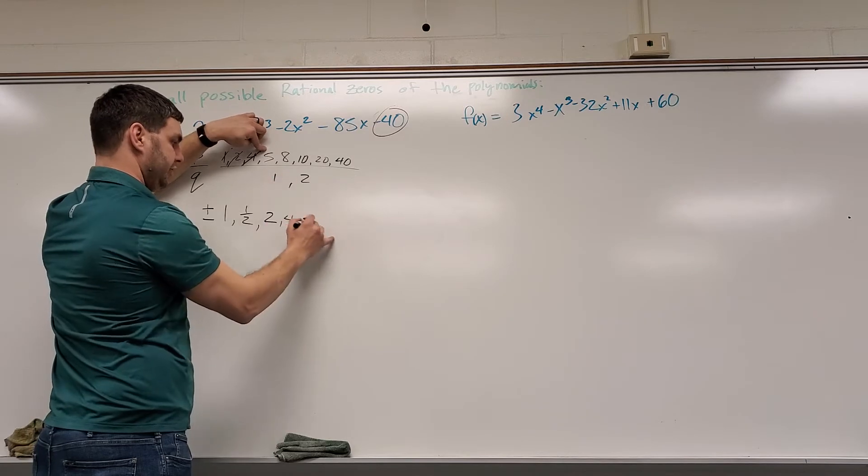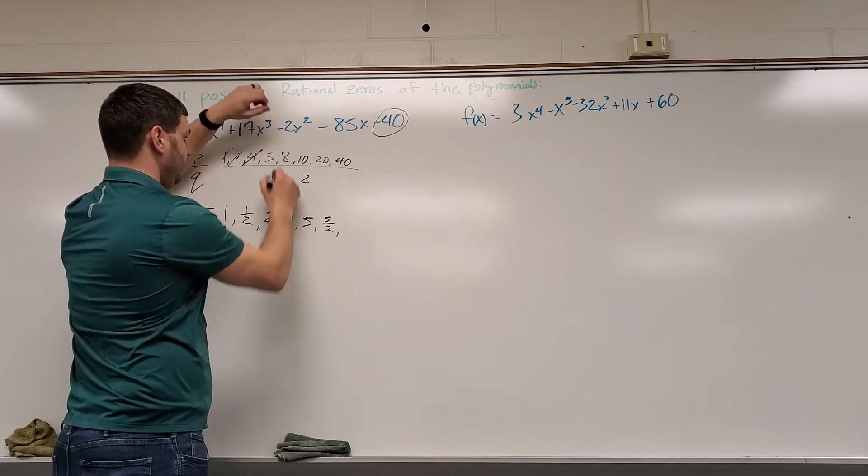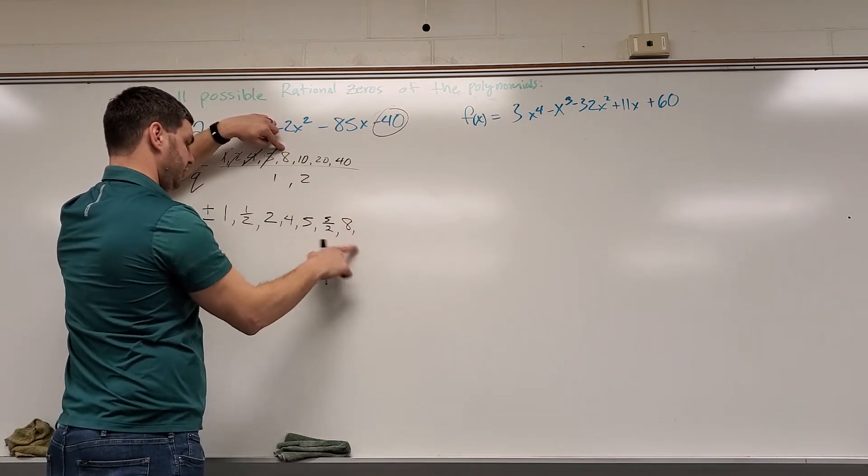5, 5 over 1 is 5, 5 over 2 is 5 halves. I don't have 5 halves, I have to write that one down. 5 is done. 8, 8 over 1 is 8. 8 over 2 is 4, which I already have.